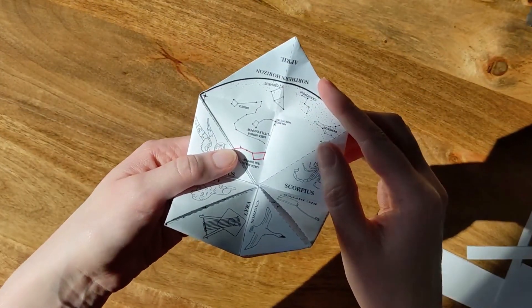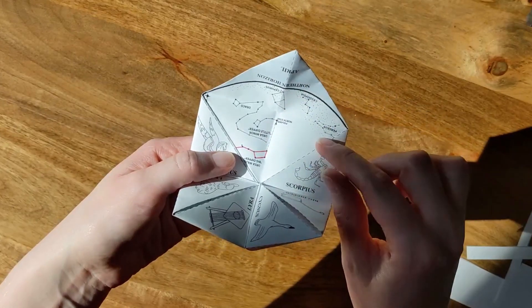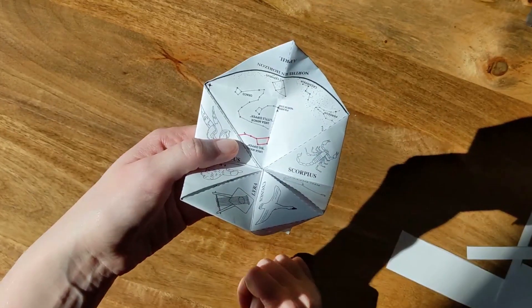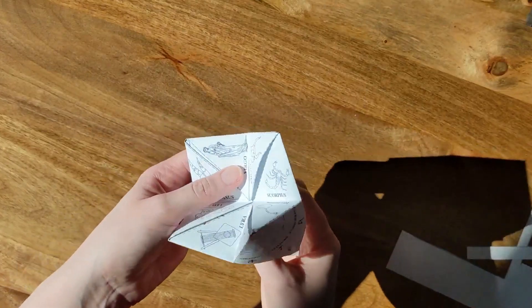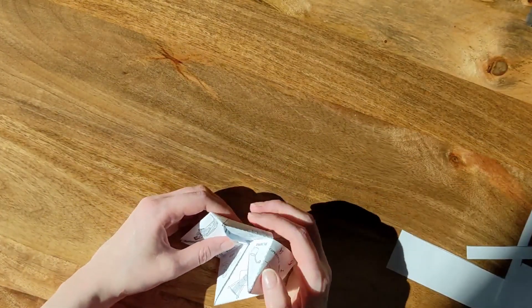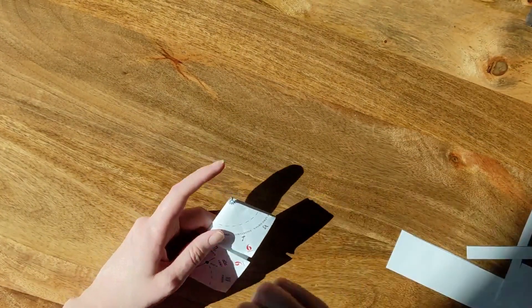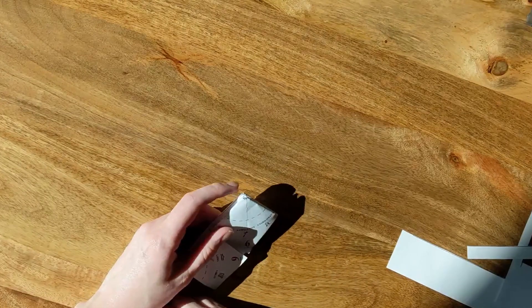And then if you look up in the sky, you should be able to see the constellation in red. And that's why it's important to print out the current month, because the constellations will change as we go through the months. So once we get into May, you can print out that one and so on.